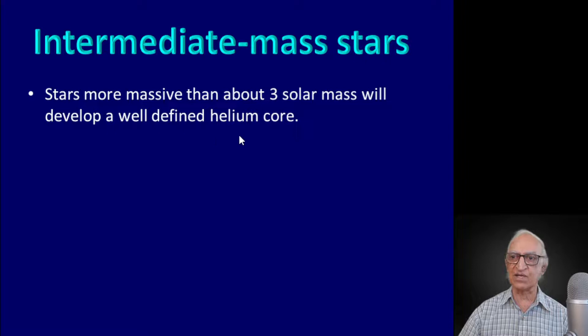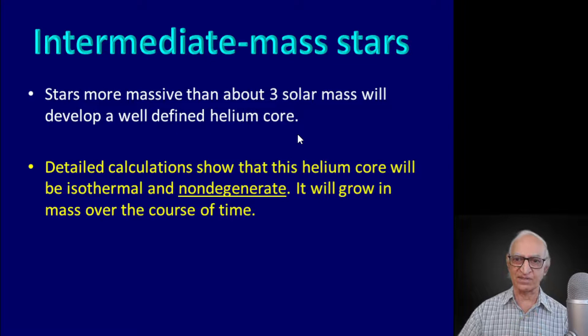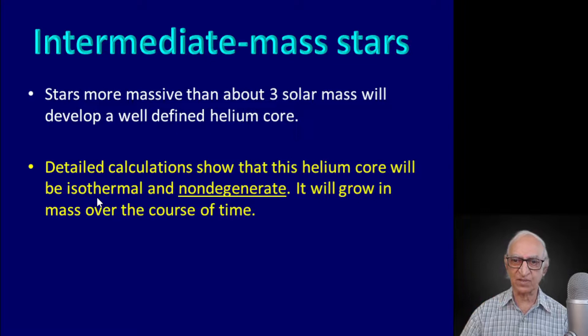Stars more massive than about three solar masses will develop a well-defined helium core over a course of time, just as the Sun will develop a well-defined helium core. Here is the important difference compared to a star like the Sun: detailed calculations show that the helium core will be non-degenerate, it will be isothermal, and it will grow in mass over a course of time.